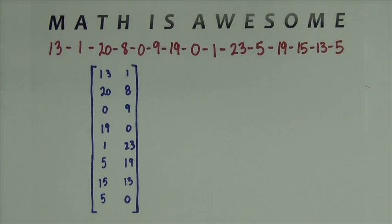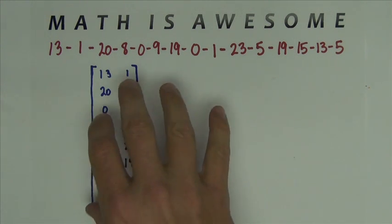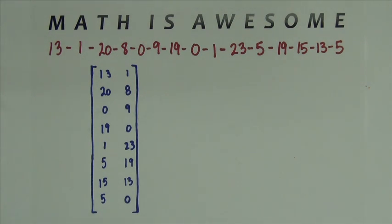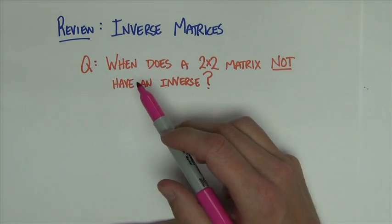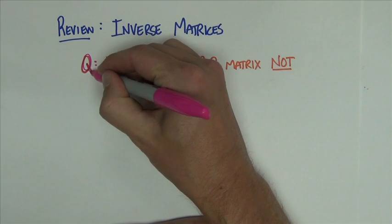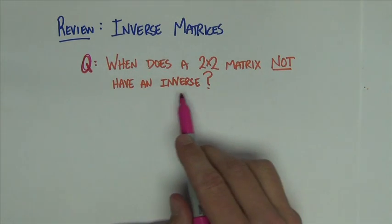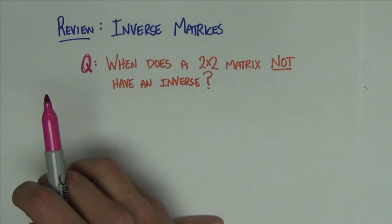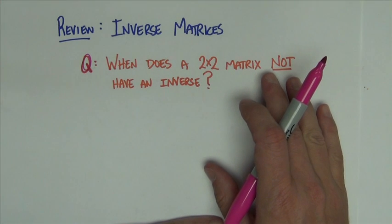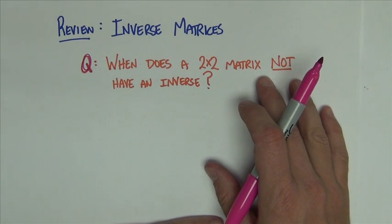Now what I need to do is come up with any 2 by 2 matrix that has an inverse to multiply to this matrix right here that I have. So any 2 by 2 matrix that has an inverse is what we're after next. So let's do a little bit of review on inverse matrices and specifically we want to answer this question. When does a 2 by 2 matrix not have an inverse? Because in order to do this coded message activity, you want to avoid matrices that do not have inverses.